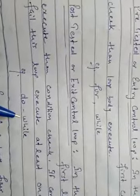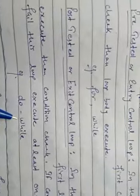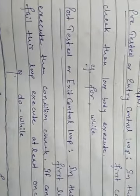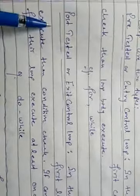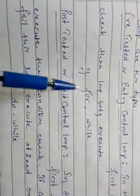So basically there are two types of loop. One is pre-tested, which has two types: for and while. The second is post-tested, which has only one loop: do-while.